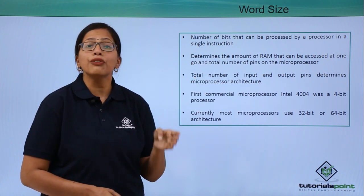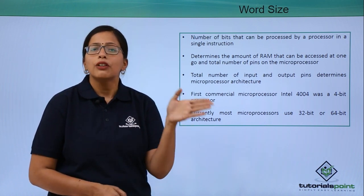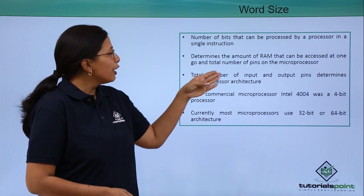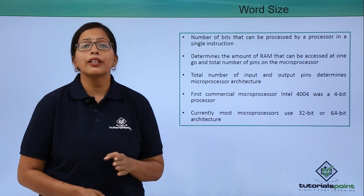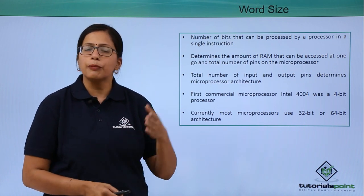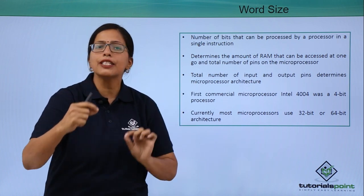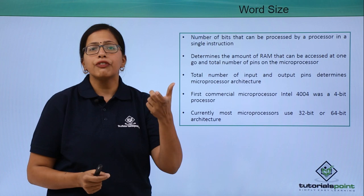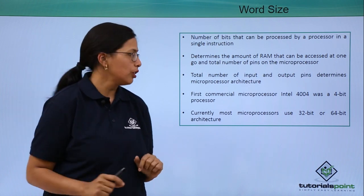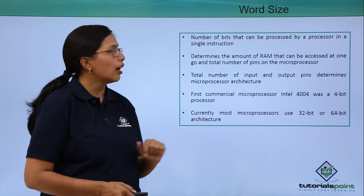Word size also determines the amount of RAM — random access memory, or the primary memory — that can be accessed by the microprocessor. The total number of input and output pins determines the microprocessor architecture, which is the way the microprocessor is actually made. As seen in the figure in the previous video, the microprocessor has many pins coming out. The number of pins depends on the word size: if there are 8 bits to be processed at the same time, then there will be 8 input pins and 8 output pins. Currently, most microprocessors are using 32-bit or 64-bit architecture.